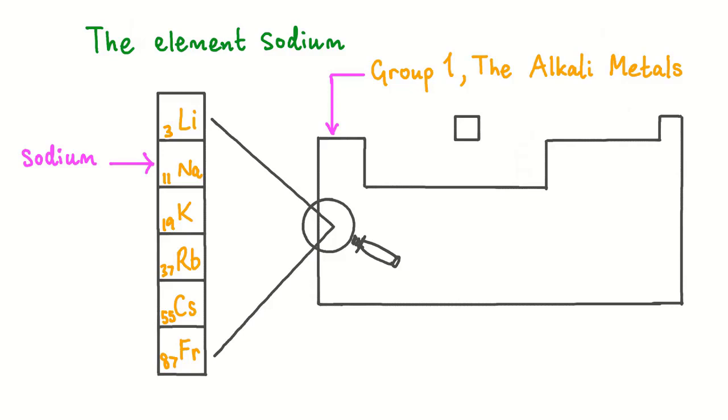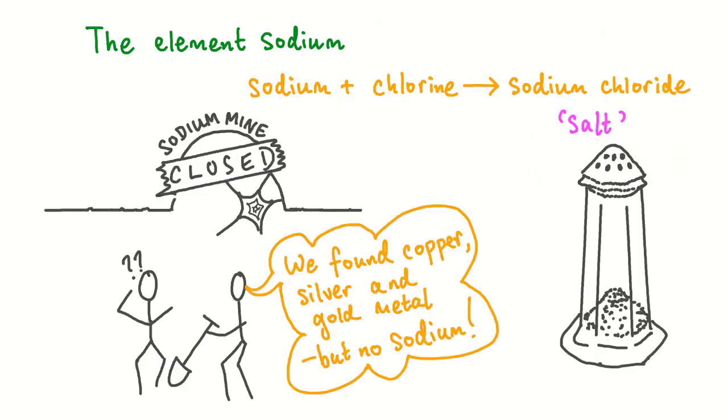The metals in group 1 are known as the alkali metals. Although common in the Earth's crust, sodium is never found in nature as a pure metal. Sodium reacts with many other elements to form salts.